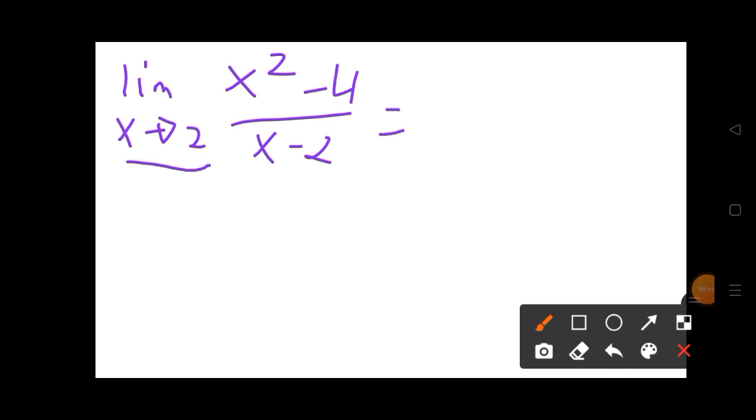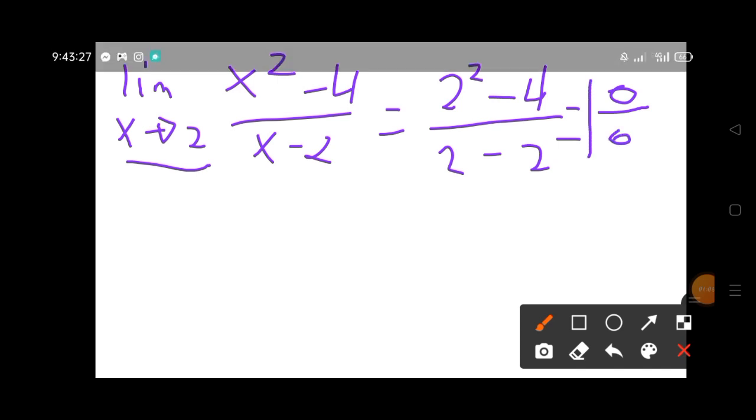So first thing we will do is we substitute the x into here. The x approaches 2, so we have 2 squared minus 4 over, same again, substitute the x, 2 minus 2. So we have now 2 squared, that will be 4, minus 4, that will be 0, and 2 minus 2 is 0. So we have final answer of 0 over 0.